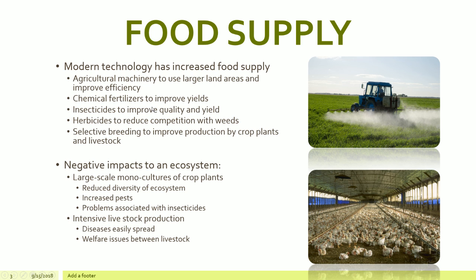There are certain negative impacts on the ecosystem. When we think about large-scale monocultures of crop plants, you get a reduced diversity in the ecosystem. You have increased pests because you have more crops, and you have problems associated with overuse of insecticides. In terms of intensive livestock production, there's more chance of disease spreading, and you get welfare issues between livestock.